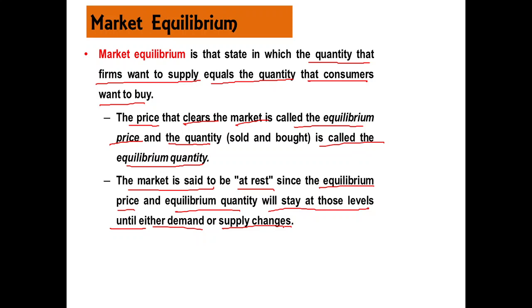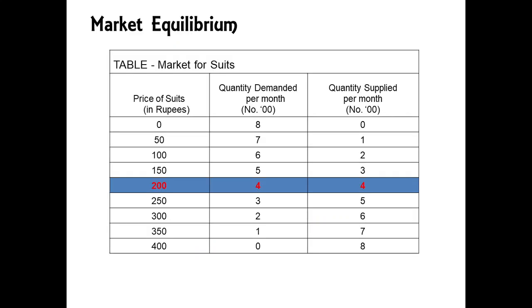If supply changes by firms or demand changes by consumers, the equilibrium price and equilibrium quantity will be changed. Let us see with the help of an example how this can be shown. I have taken the example of the market for suits.